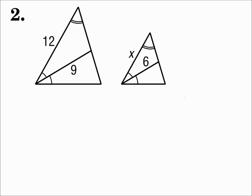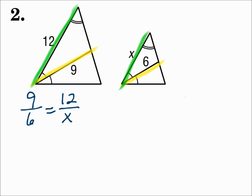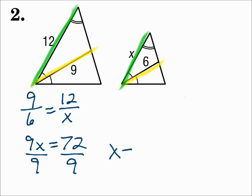Number two. Here you have two similar triangles and the angle bisectors. You know they're angle bisectors because you can see the two angles are cut into two congruent halves. The angle bisector on the left is 9, and the one on the right is 6. The side on the left is 12, and the side on the right is x. Make your proportion and organize it properly: 9 over 6 equals 12 over x. Cross multiply and solve — x equals 8. The angle bisectors are proportional in similar triangles.